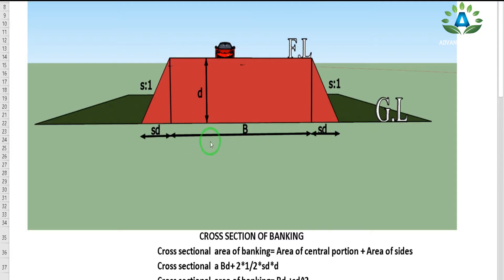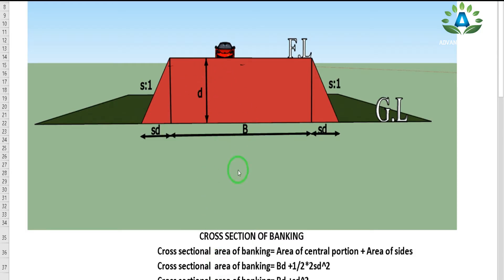We need to understand how to calculate the total area of the banking portion. We have a rectangle in the central portion, and on both sides there is a triangular portion. We have a side slope of S:1 for this banking, the depth D, and width B, with the horizontal side-slope distance SD. The cross-section area of banking equals the area of the central rectangle plus the two triangles: A = BD + SD².